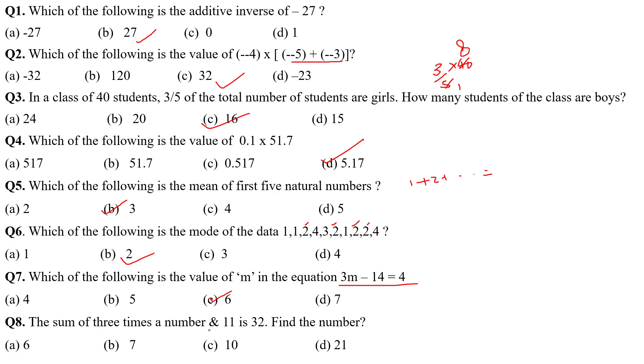The sum of 3 times a number and 11. 3 times a number, let the number be X, then it will be 3 times 3X, then plus 11. That is equal to how much? 32. So, when you solve this equation, 32 minus 11, it will be 21, 3, 7, then 21. Yeah, B is the correct answer. So, 8 questions within 2 minutes, you have to solve it.